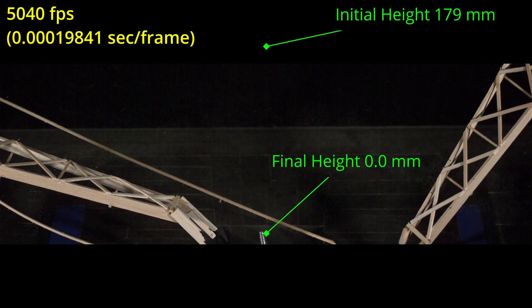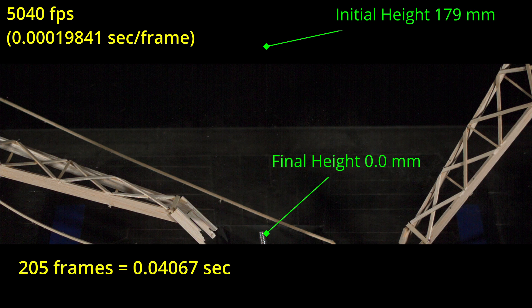Now it's just a matter of counting the total frames between the initial and final height. It took 205 frames, or roughly 0.04 seconds. With some simple math, we can compute the average speed over that distance, which turns out to be 4.4 meters per second.